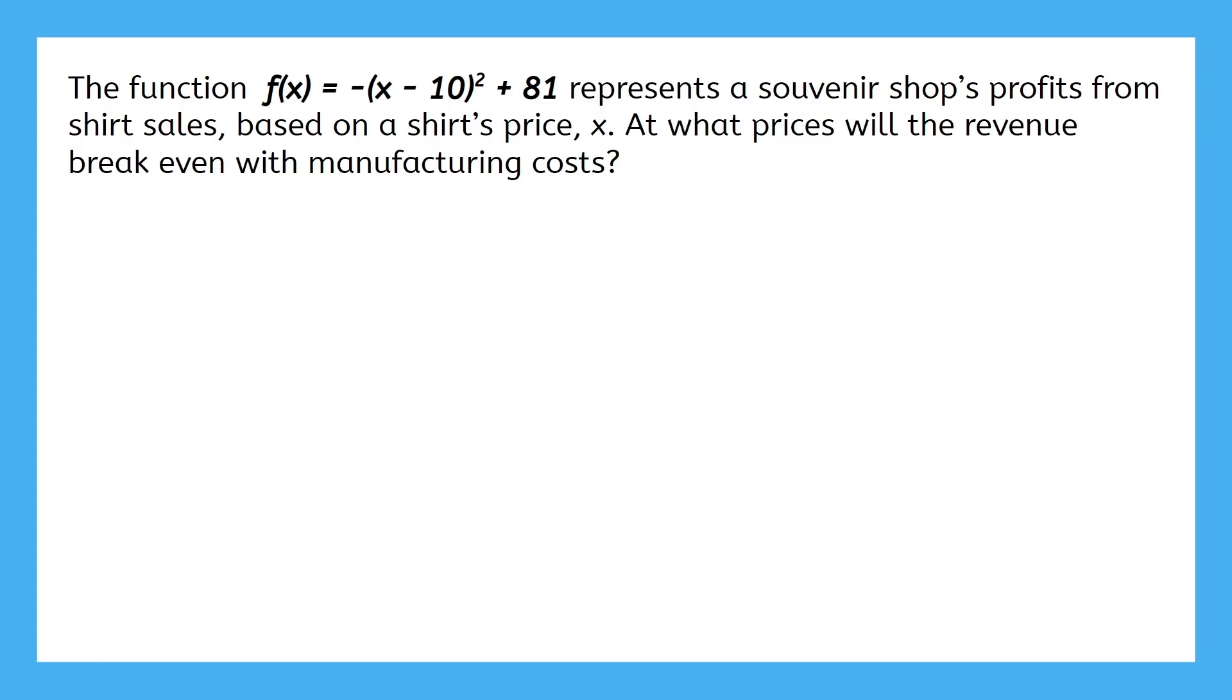The function f(x) = -(x - 10)² + 81 represents a souvenir shop's profits from shirt sales based on a shirt's price, x. At what prices will the revenue break even with manufacturing costs?